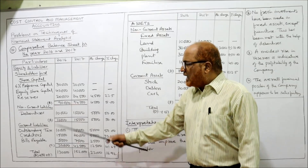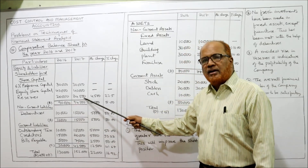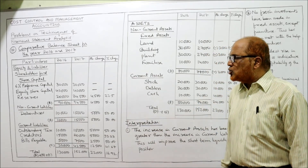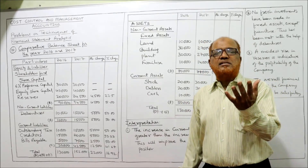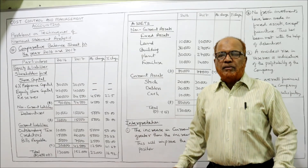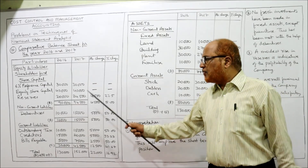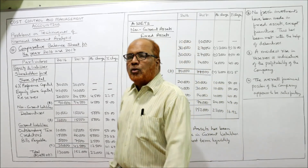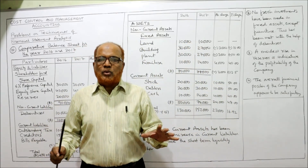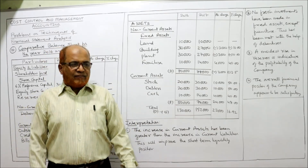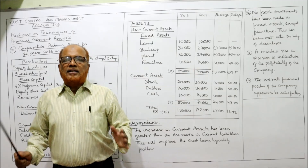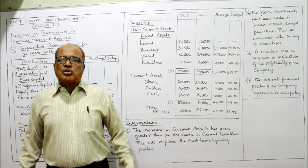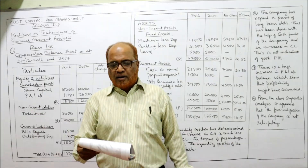Regarding profitability, reserves increased from 20,000 to 24,500, a 22.5% increase in percentage terms, indicating moderate profitability. The profitability is not high but moderate. From this analysis we can conclude that the overall financial position of the business is satisfactory. This is the end of problem number 10.